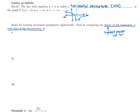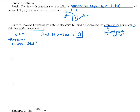There are three cases. One thing that could happen is the degree of the denominator could be bigger than the degree of the numerator — I'm going to call this bottom heavy. Bottom heavy is the best. That means the limit as x goes to plus or minus infinity is always zero.